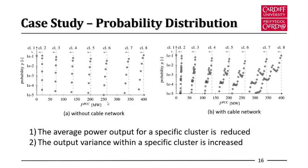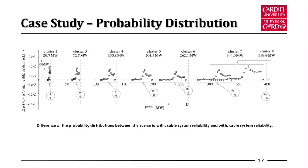The next two slides show the state probability distribution with and without inclusion of the cable network. From these two graphs we can draw two conclusions: the average power output for a specific cluster is reduced, and the output variance within a specific cluster is increased when the cable network reliability is introduced. The state probability is distributed more broadly when the cable section is included in the reliability problem.